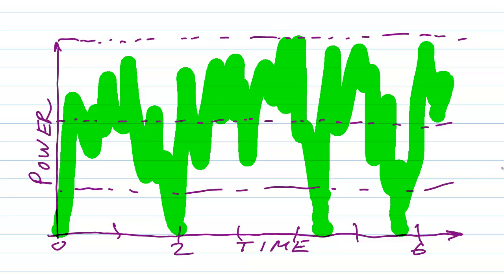So the average power is always smaller than the peak power. Here is the peak power, and then somewhere down in here is the average power.